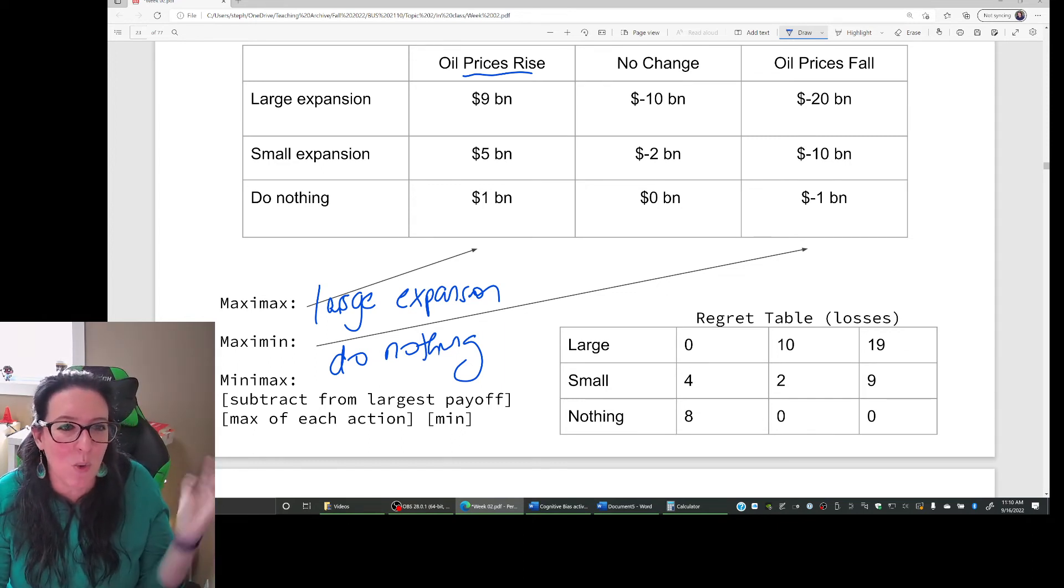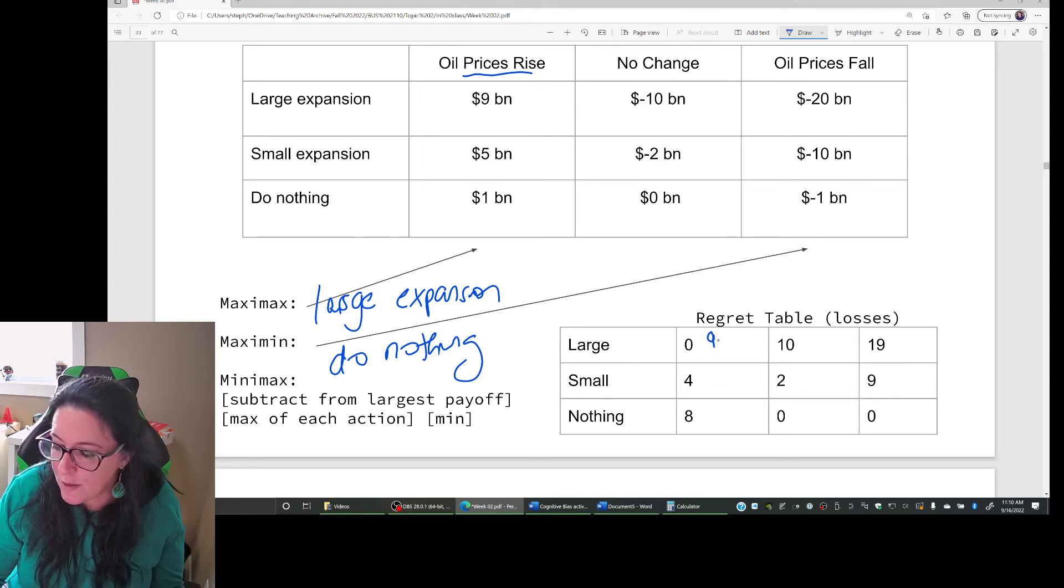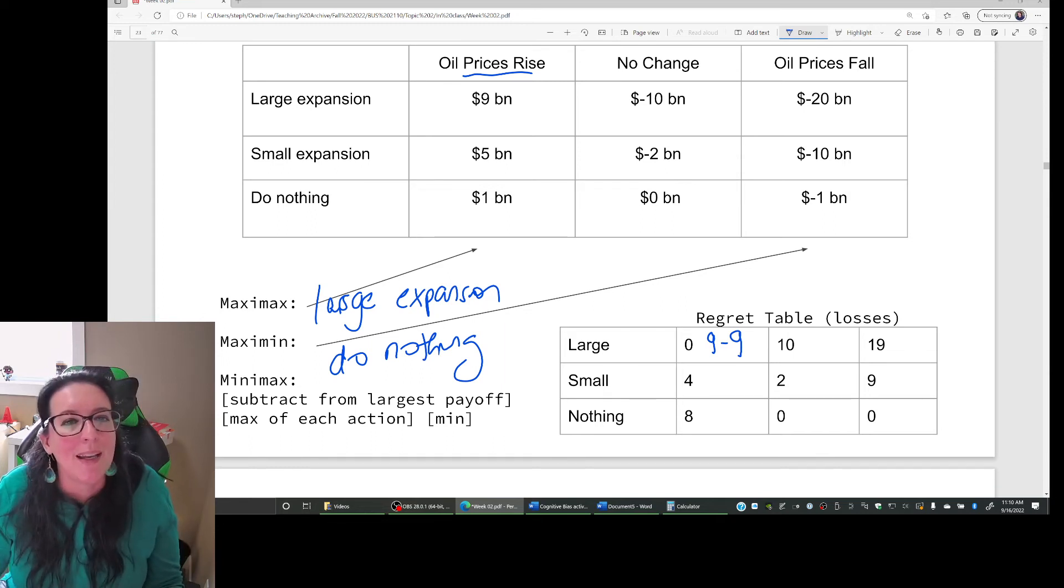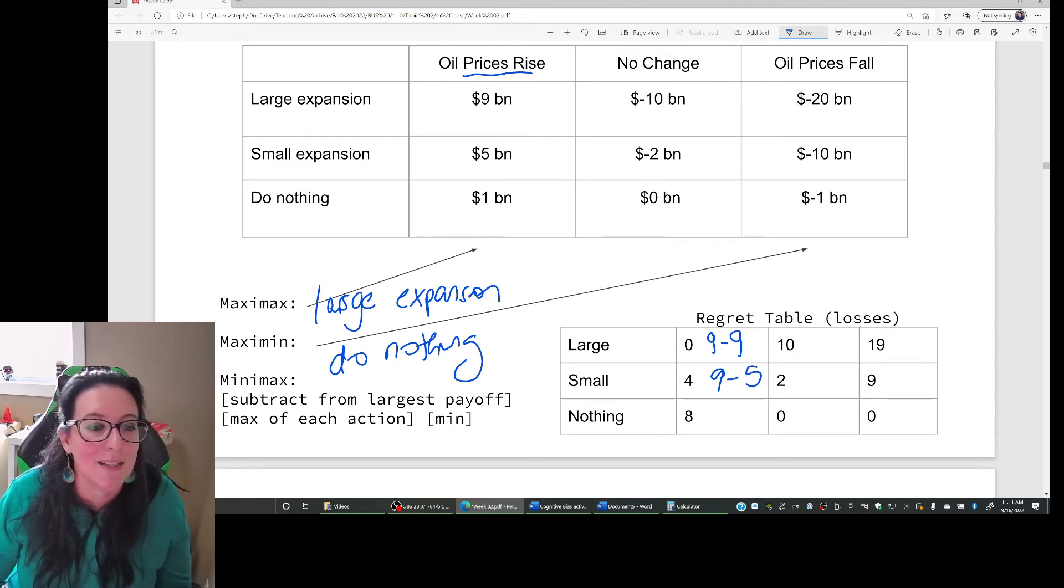And our point here is to minimize the regret or loss under all these conditions. So how do we go about doing that? How do we build this regret table? Well, we look at oil prices rising and we say, what's the best outcome if things are great? Well, the best outcome was oil prices rise. We did a large expansion. We make $9 billion. Well, what if oil prices rise and we don't do a large expansion? Well, if we do the large expansion, there's no regret. 9 minus 9, zero. We got the best we could. But if oil prices rise and we did a small expansion, not a large, then we could have made $9 billion. We're only going to make $5 billion. And so the regret is $4 billion.